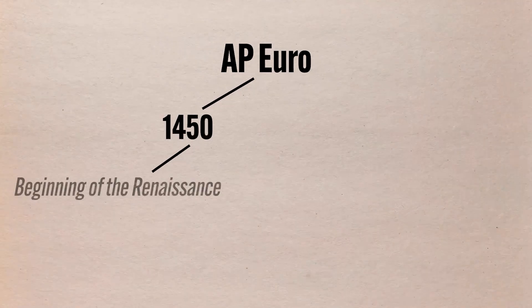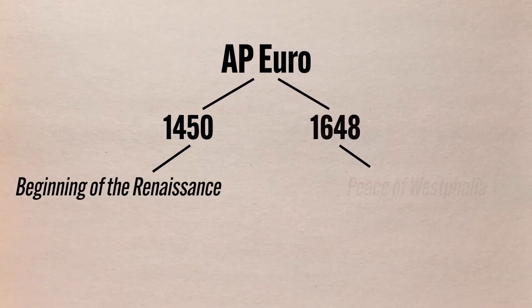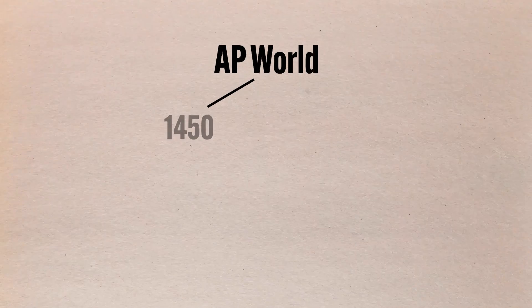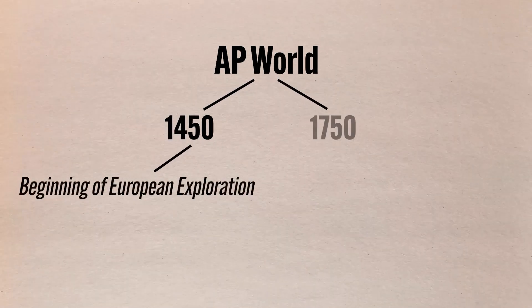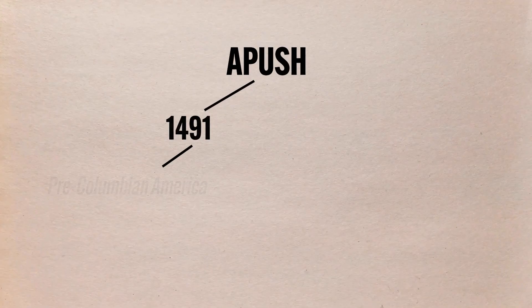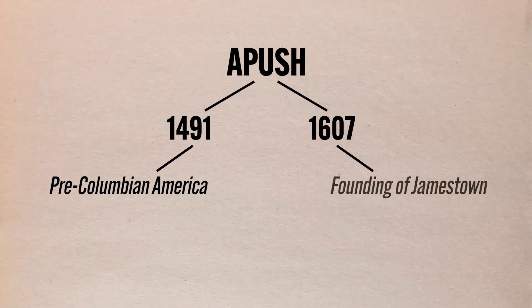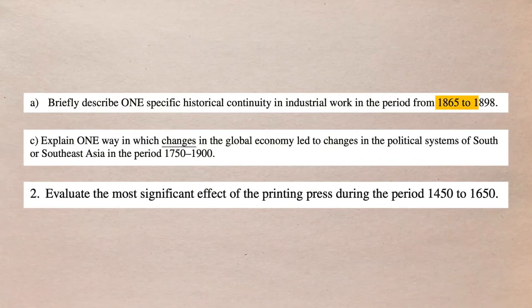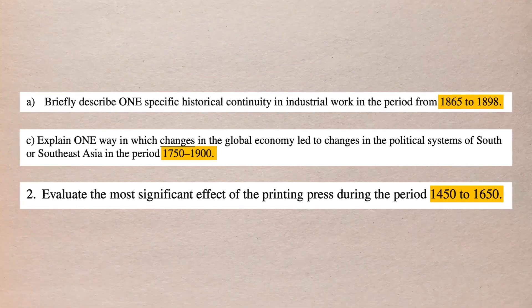Furthermore, it is exceedingly helpful for students to know the dates that frame the time periods in the curriculum and what those dates stand for. AP Euro students need to know that 1450 represents the beginning of the Renaissance and that 1648 is the Peace of Westphalia. AP World students need to know that 1450 represents the beginning of European exploration and that 1750 represents the beginning of industrialization. APUS students need to understand that 1491 represents pre-Columbian America and that 1607 is the founding of Jamestown. At the beginning of every unit, I take time in class to make sure they know what these framing dates stand for, because these are the dates that are often going to show up in their writing prompts, and in order to write a coherent essay, they need to know what events are framing that period.